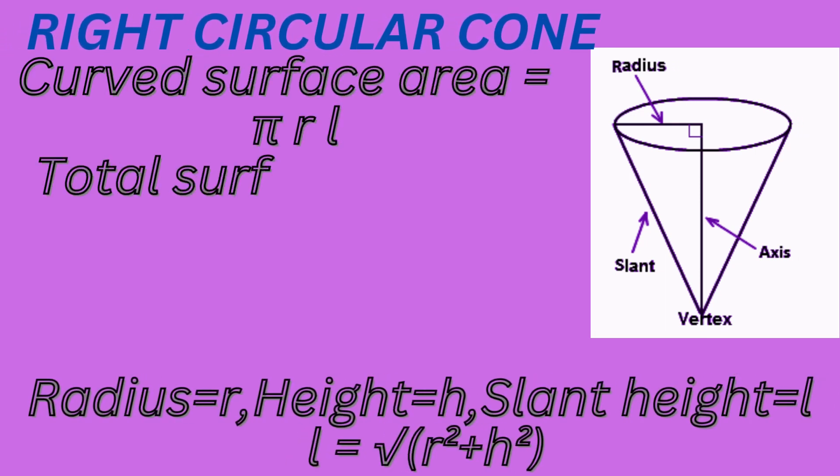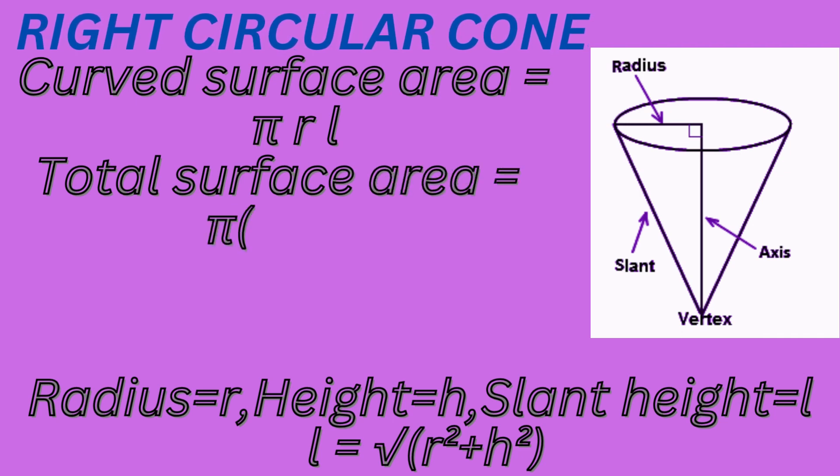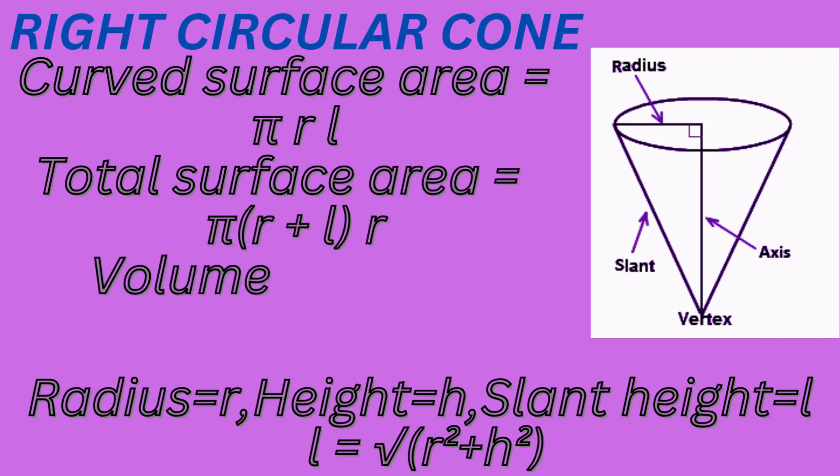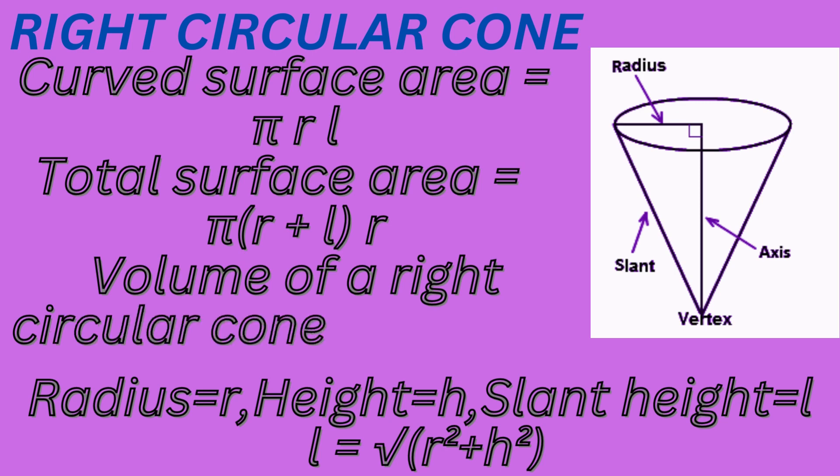Now there are different formulas that are used in solving problems regarding cone. Curved surface area equals to pi into R into L, total surface area of the cone equals to pi R into R plus L, and the volume of the right circular cone equals to one-third pi r squared H.